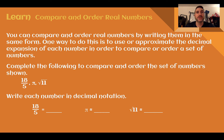Compare and order real numbers. You can compare and order real numbers by writing them in the same form. One way to do this is to use or approximate the decimal expansion of each number to compare or order a set of numbers.